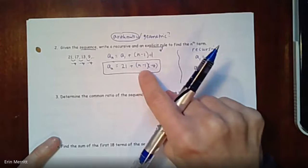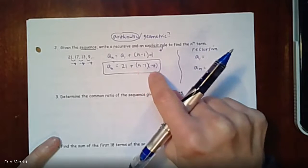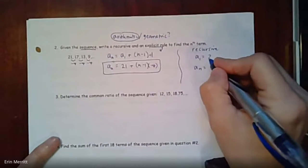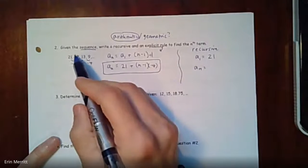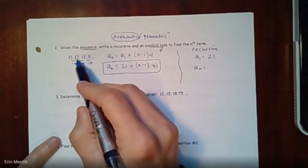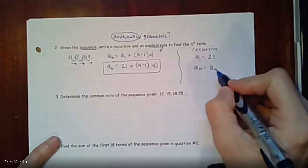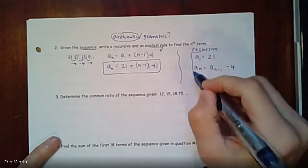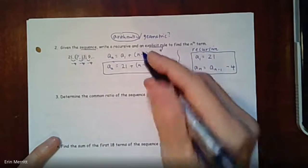Please make sure if you don't distribute that, you put parentheses around it so it doesn't look like you're saying n minus 1 minus 4 - it needs to look like it's (n-1) times -4. For recursive, the first term's 21, and then to get from one term to the next, I would take the term before it and subtract 4. So we would take a_(n-1) and then subtract 4.